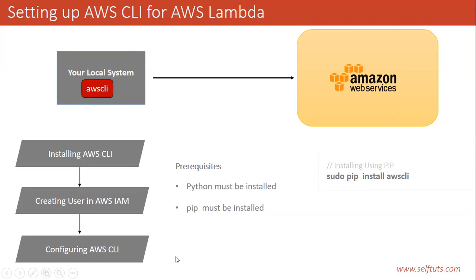This is how you configure your AWS CLI in your local system to interact with Amazon Web Services. This was all about setting up AWS CLI for AWS Lambda. In the next videos, we'll see how to create Lambda functions through AWS CLI without using the web console, just by writing commands in the command line tool. If you like my channel, please subscribe, and if you like this video, please give a thumbs up. Thank you.